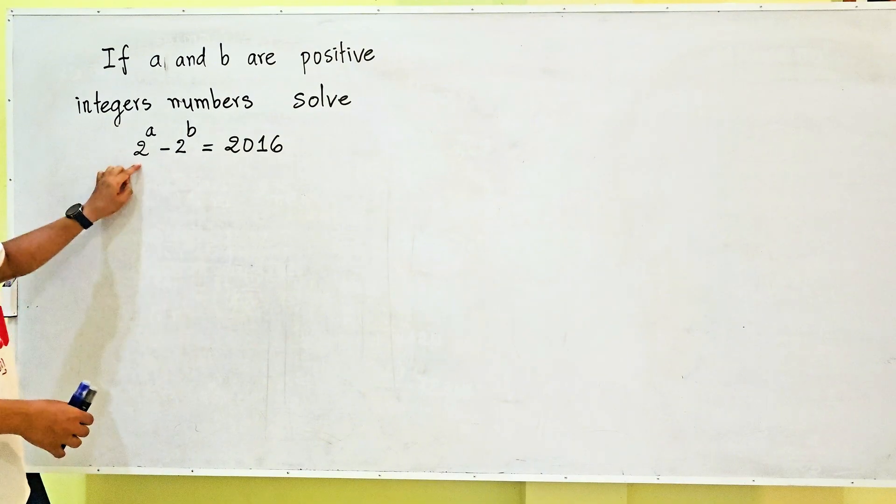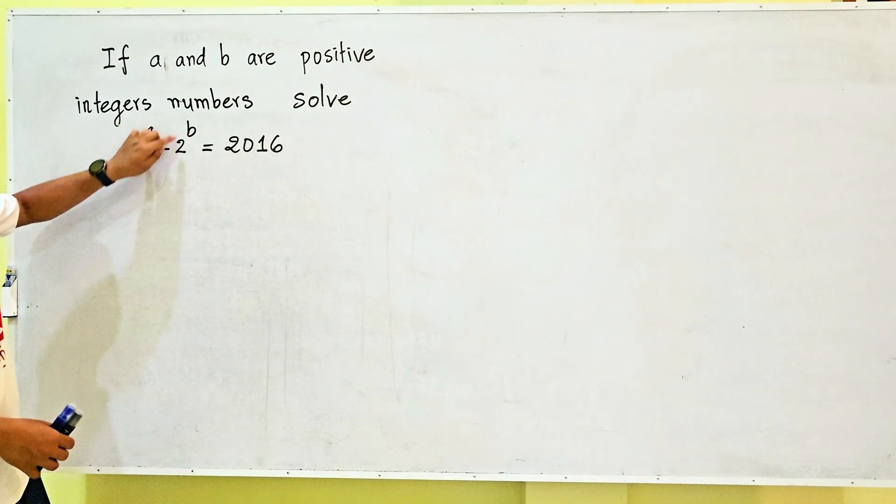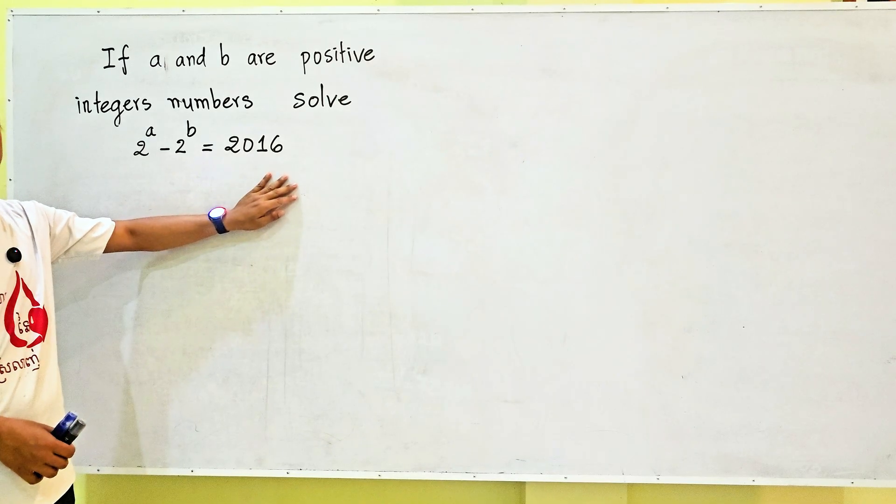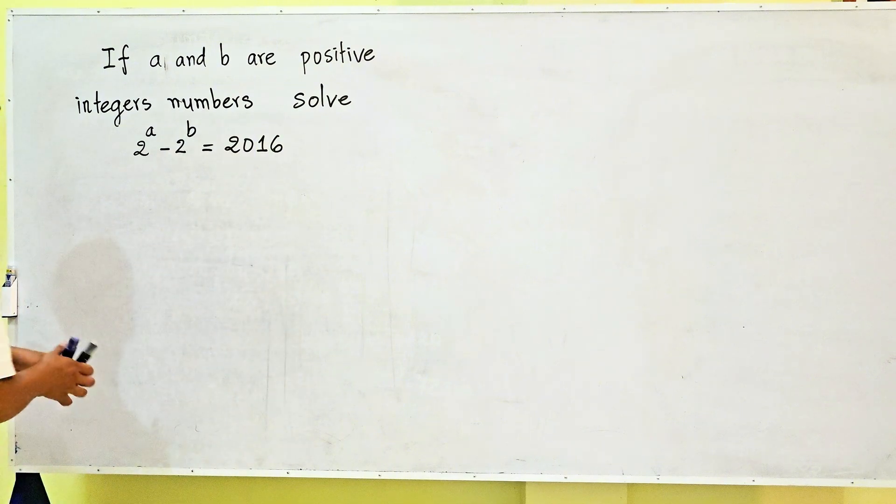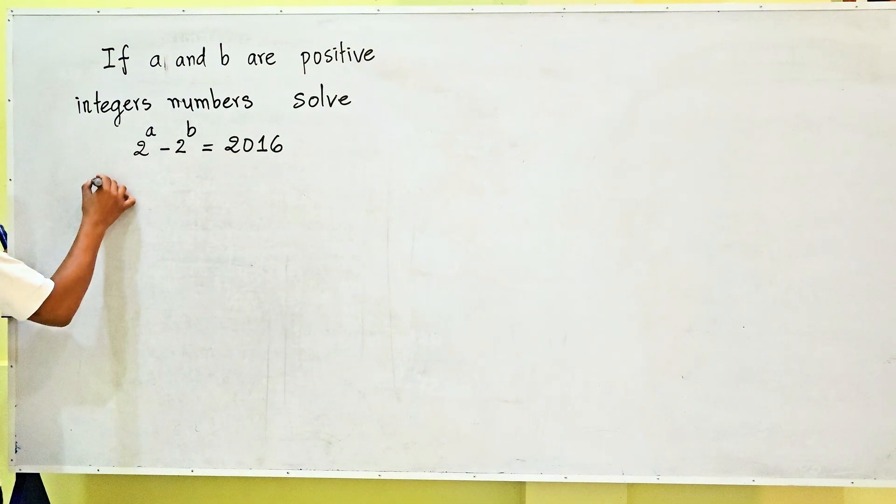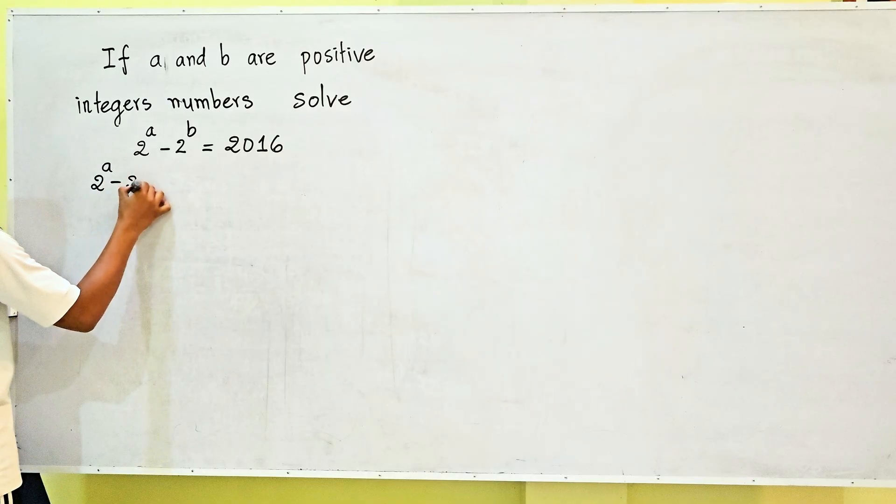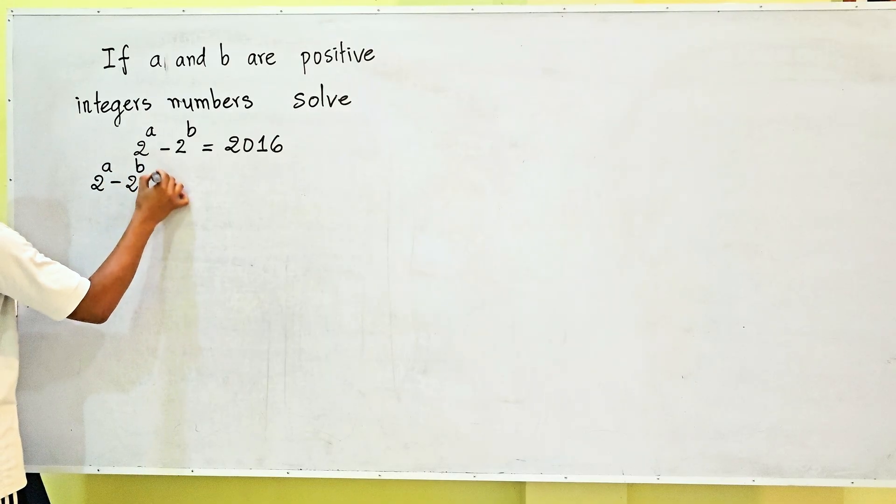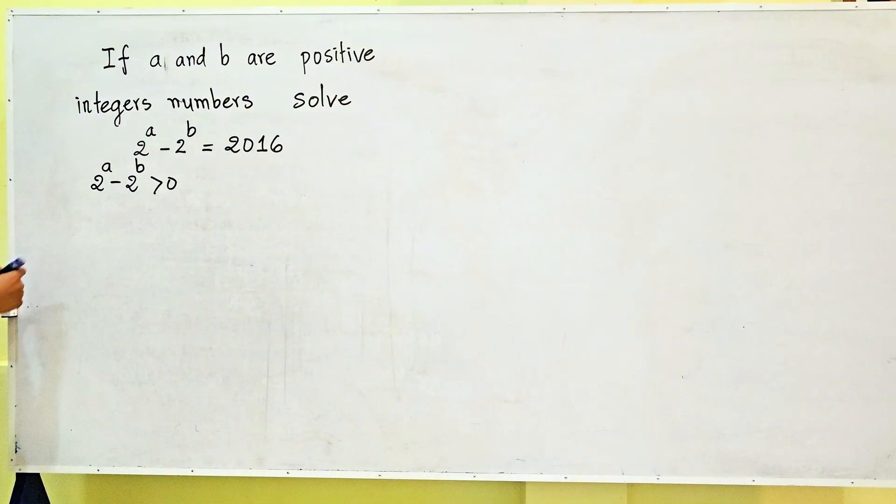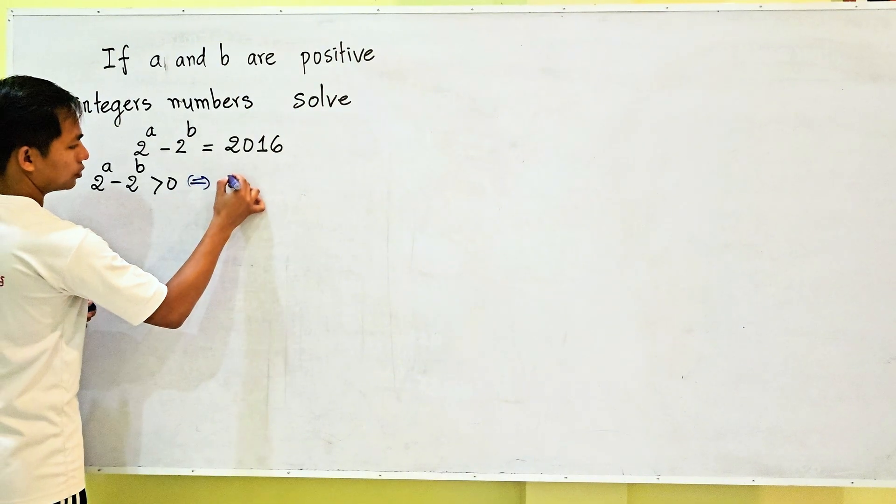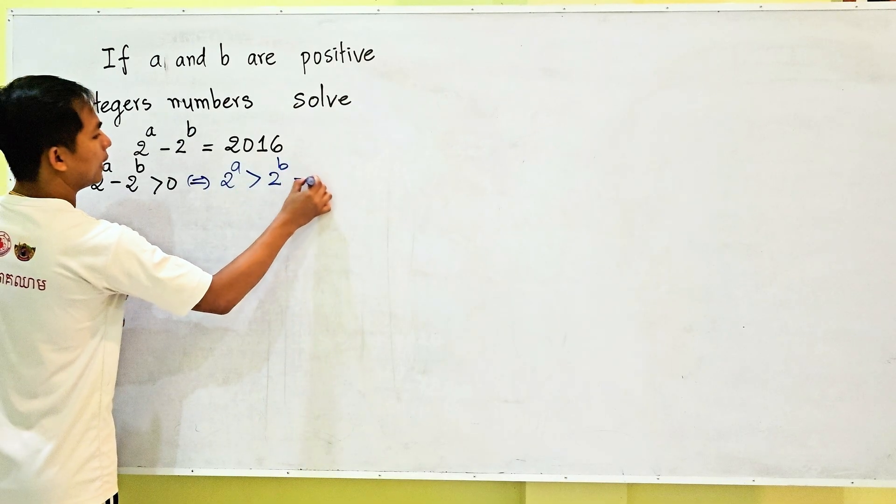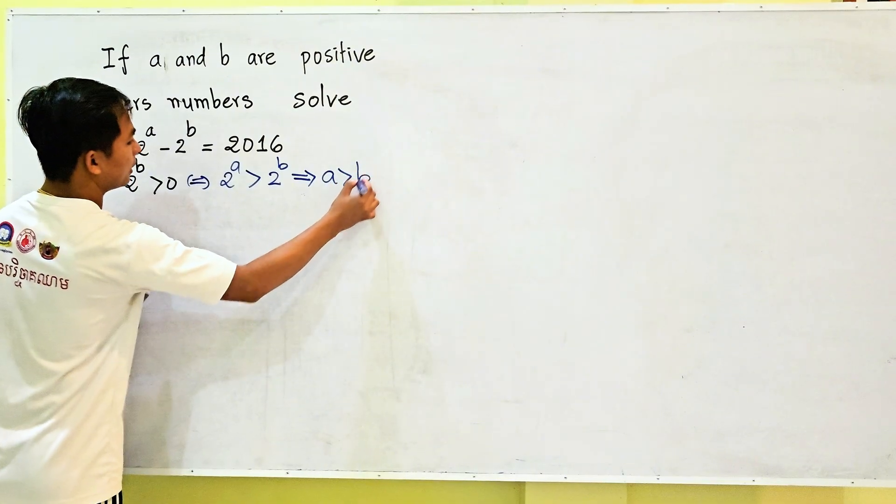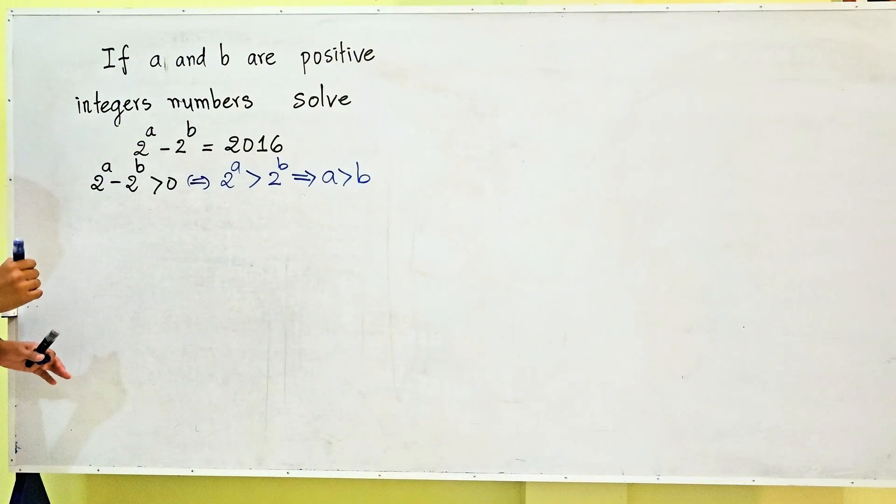Look here, 2^a - 2^b = 2016. Since this is positive, we get that 2^a is bigger than 2^b, and therefore a is bigger than b. Now, if a is bigger than b, we can let a equal b plus m.